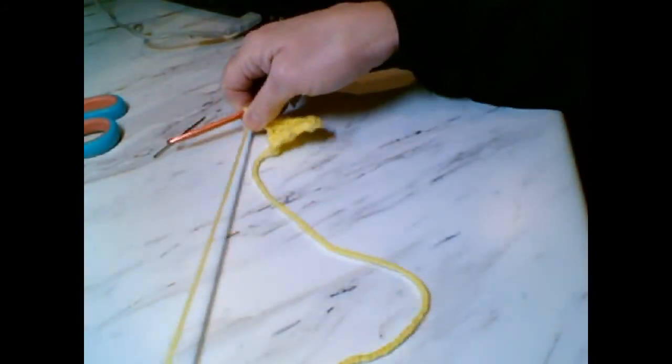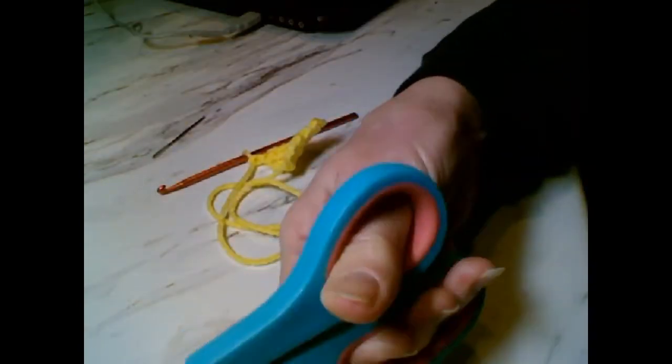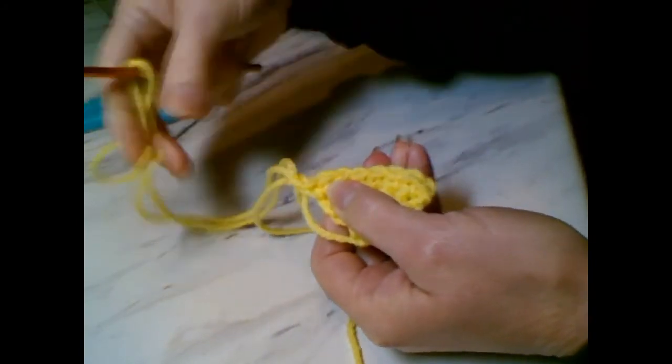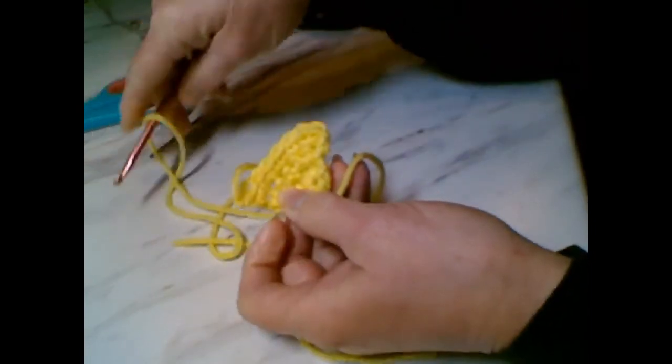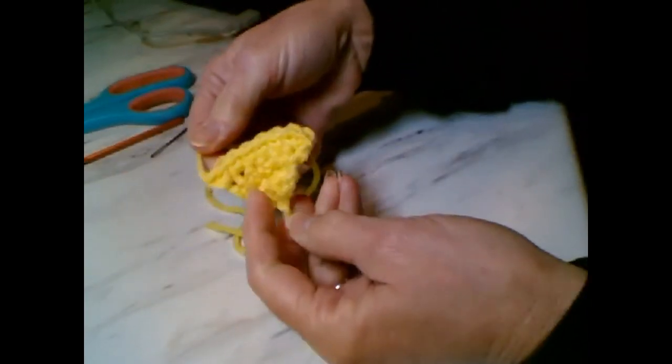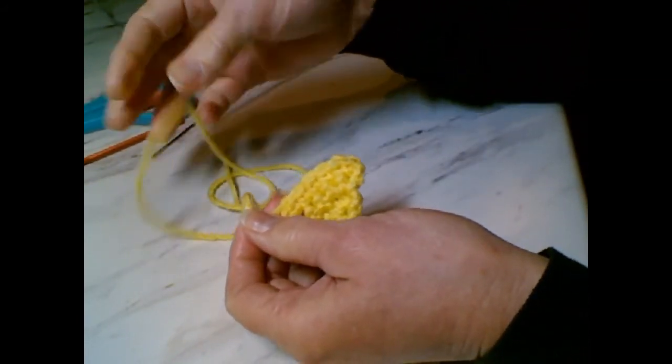To finish, do one chain, pull out maybe twelve or fifteen inches of yarn, and pull that through. And you're set. This will be what you sew your beak on with.